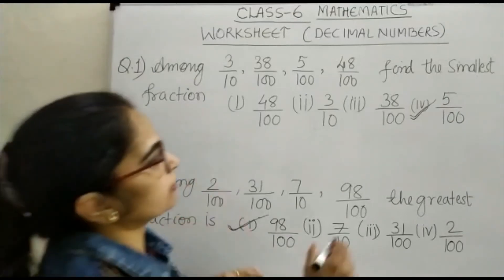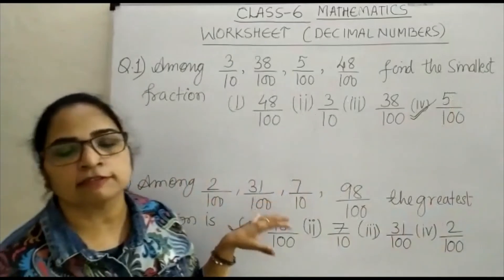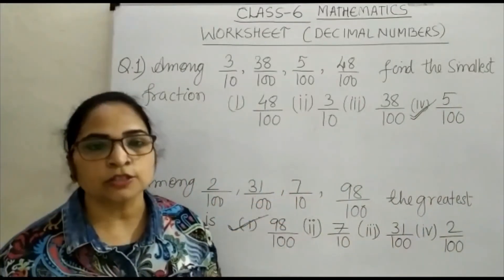So in the first case, your answer is 5 upon 100. In the second case, it is 98 upon 100 is the greatest. Thank you.